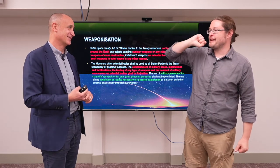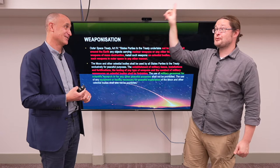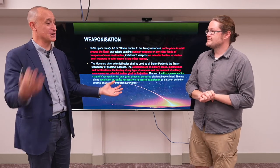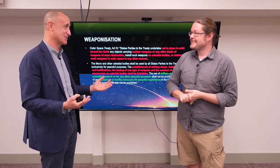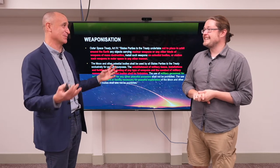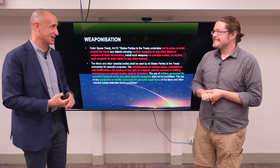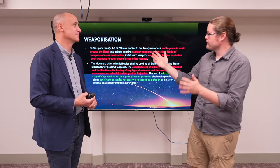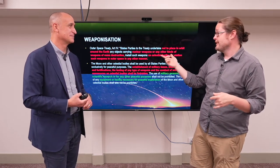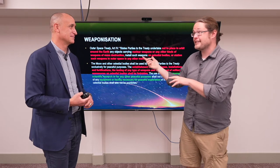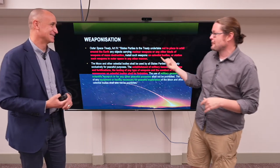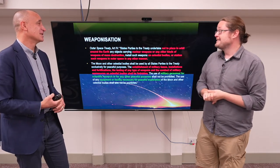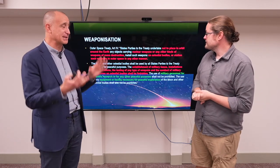The treaty prohibits parking weapons of mass destruction in space, but if a weapon transits through space on the way to a target, that is permitted. Of course, when the Soviet Union and the United States were negotiating the Outer Space Treaty, they weren't about to exclude the possibility of nuclear-tipped ballistic missiles transiting space. Still, this was 1967 — the height of the Cold War — so taking the step of saying you shouldn't station weapons permanently in space was considered meaningful progress.